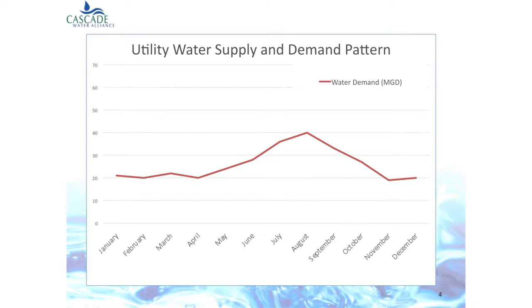Moving on to supply and demand, because this is really the crux of what drives our costs. This is an average water demand pattern averaged over the course of a year from January to December, showing the average for each month. The vertical axis is how much water the community uses. In the wintertime, it's about 20 million gallons a day for Cascade, which serves 350,000 people. In the summertime, it more than doubles — the peak month is about double that, and the peak day would be half again as much.